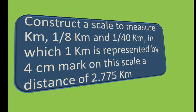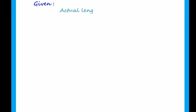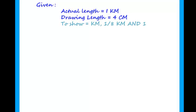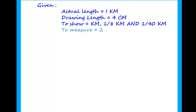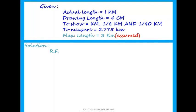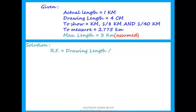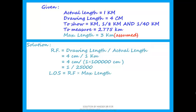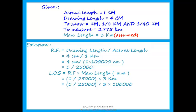Firstly we will calculate RF, then the length of scale. Given data: actual length equals 1 kilometer, drawing length equals 4 centimeters. We have to represent kilometer, 1/8 kilometer, and 1/40 kilometer, and measure 2.775 kilometers. Maximum length is 3 kilometers. RF equals drawing length divided by actual length: 4 cm divided by 1 km, so RF equals 1/25000. Length of scale equals RF multiplied by maximum length: 1/25000 into 3 kilometers, converting to millimeters gives length of scale equals 120 mm.